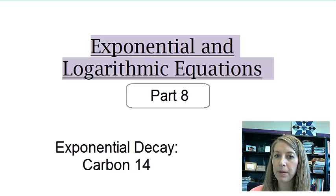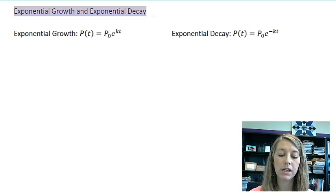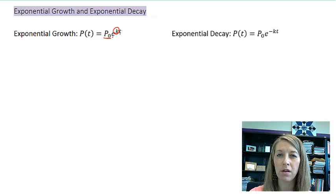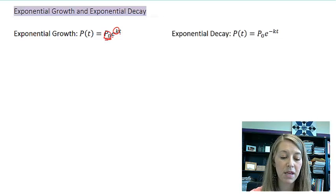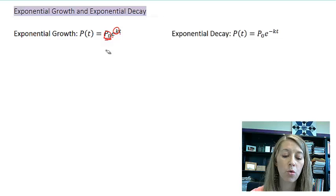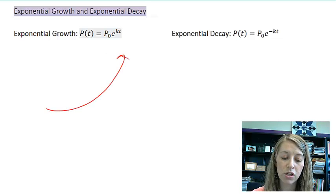All right, and then our last application video over exponential and logarithmic equations. So we've seen before the exponential growth, which is our initial value times e to the kt, where k represents rate, so instead of r we use k sometimes. Instead of p, we might use p naught, but it's all basically the same equation. It's the continuously compounding equation. So this is our growth formula if our exponential function looks like this.